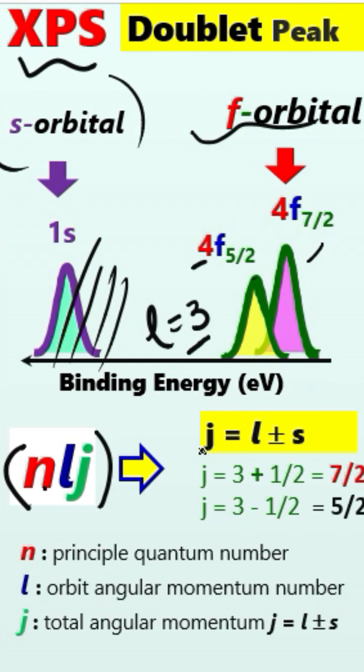This j represents total angular momentum, which equals l (orbital angular momentum) plus or minus s (spin angular momentum), which is equal to plus or minus 1/2. This is not orbital; this is spin.